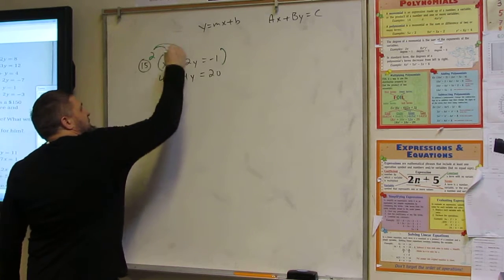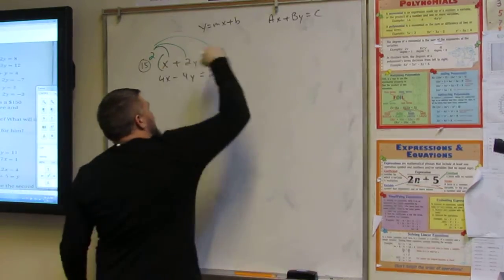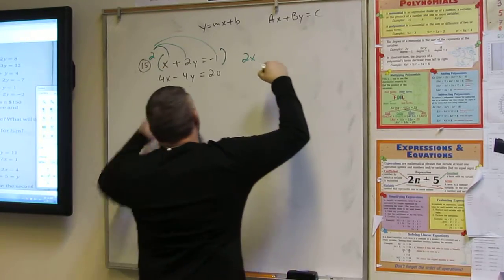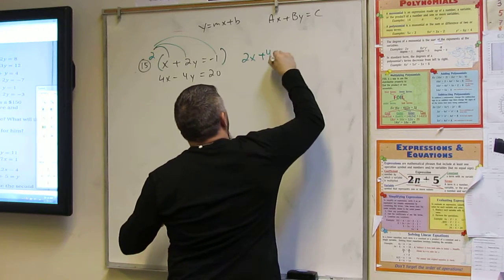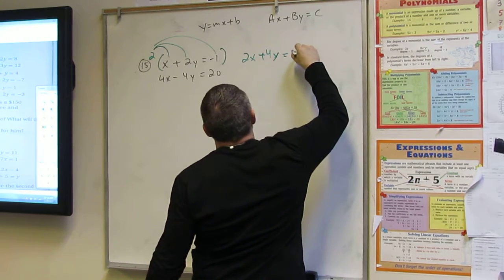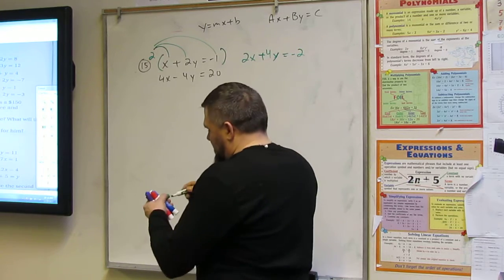So, one, two, three. Two times one is two. Two times two is four. Two times negative one is negative two. Perfect. Then move this over.